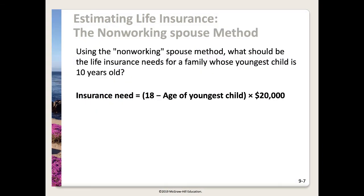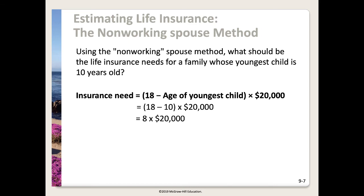Here's the non-working spouse method again. Using this method, what should be the life insurance needs for a family whose youngest child is 10 years old? Plugging into the formula: 18 minus 10 equals 8, then 8 times $20,000 gives an insurance need of $160,000.